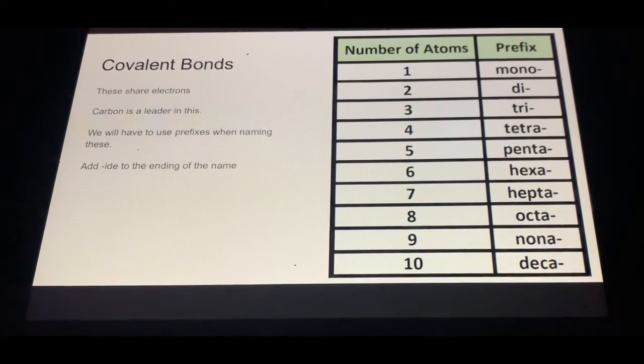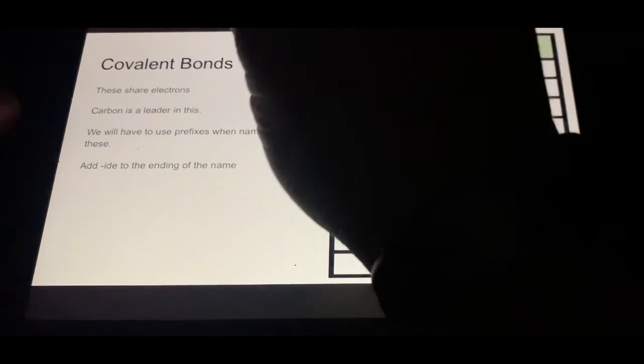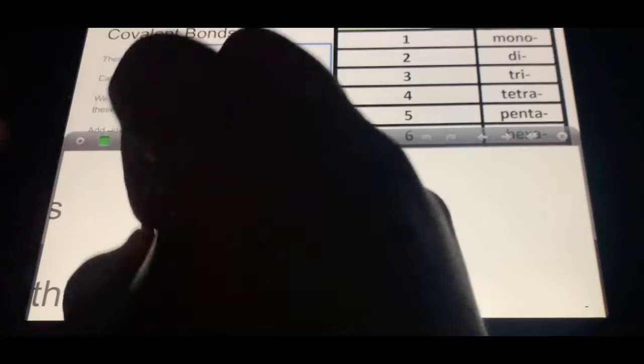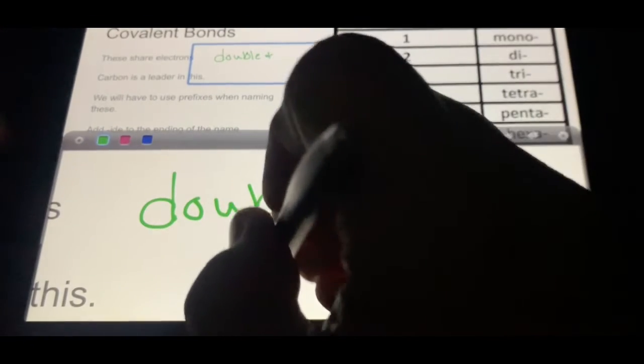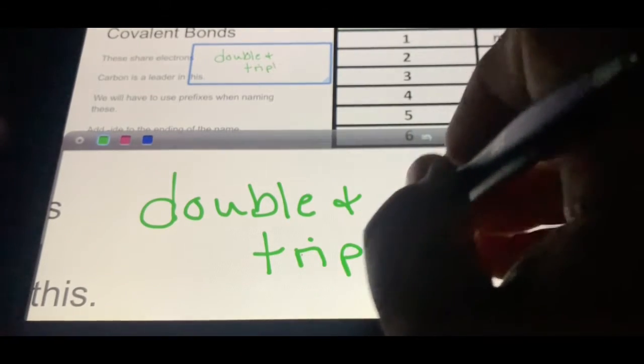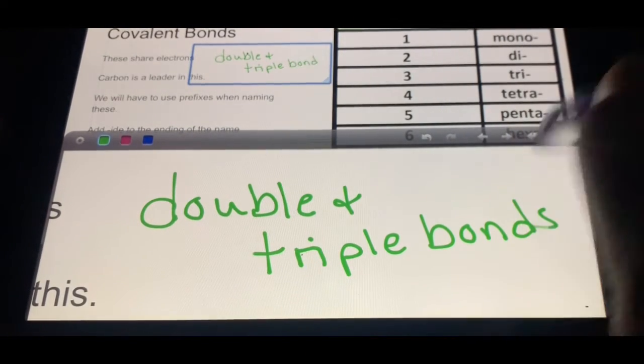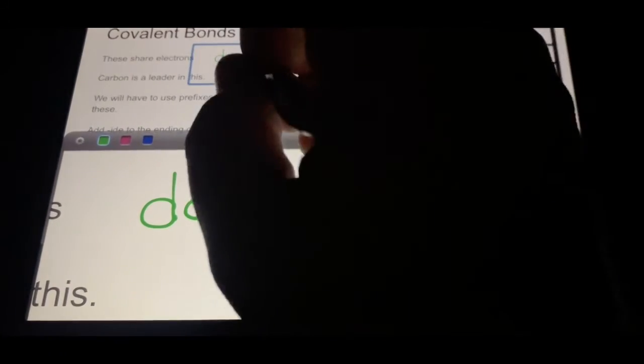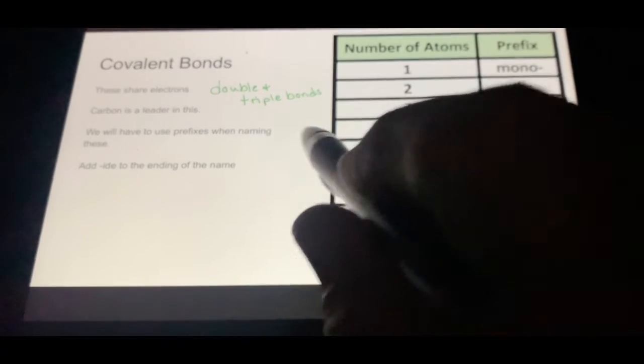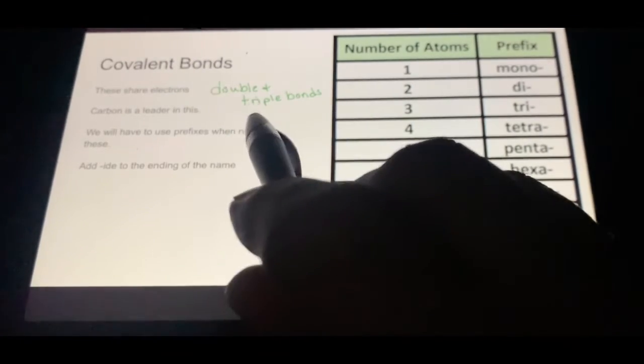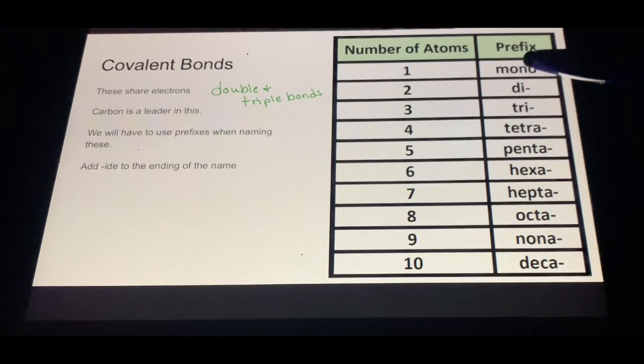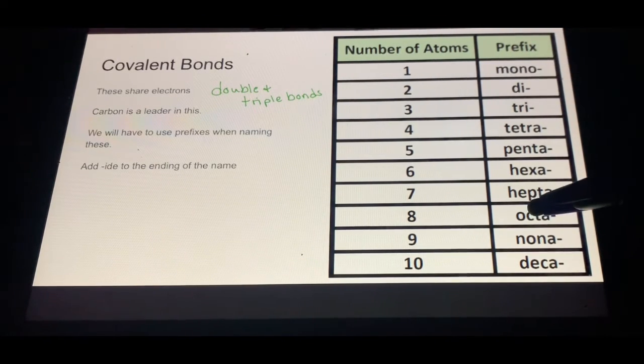Covalent bonds share electrons and carbon is a leader in this. Because they can share electrons, covalent bonds are known for having what we call double and triple bonds. Carbon is a leader in this, so if you see carbon, you've got a covalent bond. We will use prefixes when naming. If you're not familiar with your prefixes, here it is available to you.